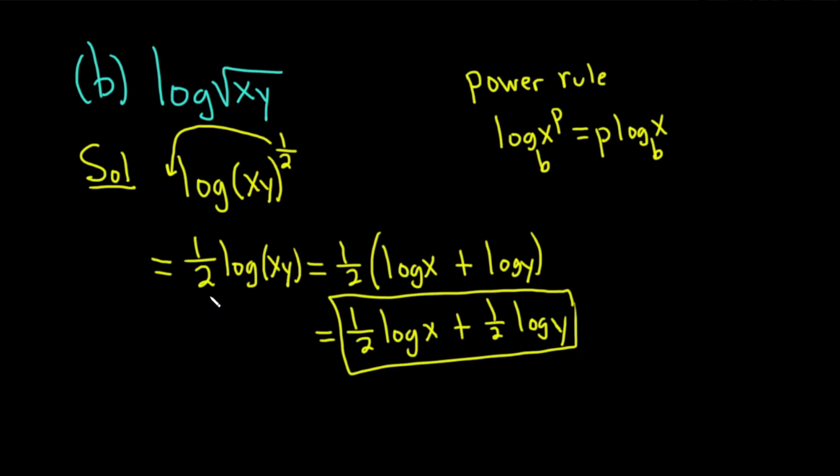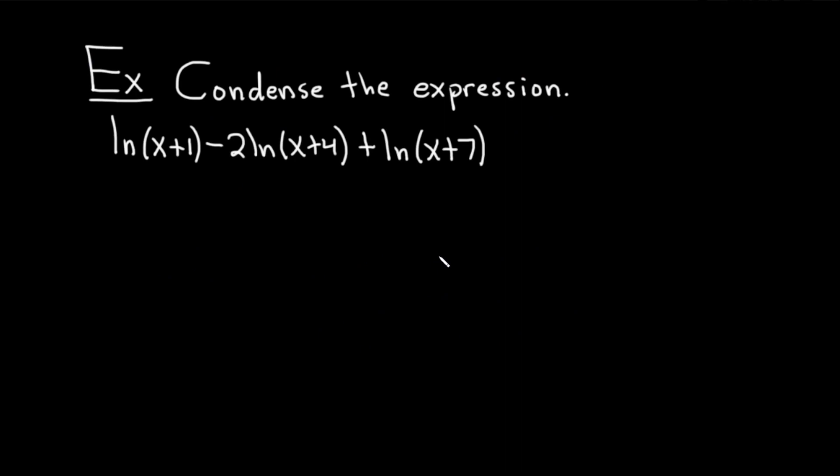Let's go ahead and do something a little bit different. Let's go backwards. So given something that looks like this, that's all expanded, we're going to try to condense it. So here is our last example. The directions are to condense the expression. And this example uses every single law of logarithms. It uses the product rule, the power rule, and the quotient rule, which is one we haven't seen yet.